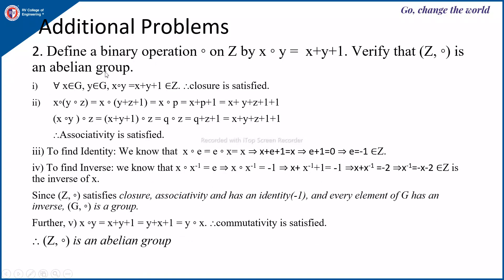Second problem: a composition is defined on Z by x∘y = x + y + 1. We need to verify that (Z, ∘) is an abelian group. For all x, y in Z, x∘y = x + y + 1, which is also an element of Z. Therefore, closure is satisfied.